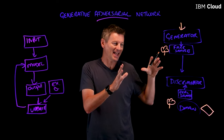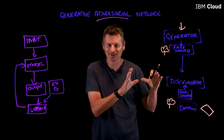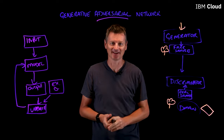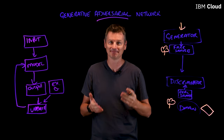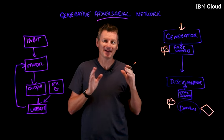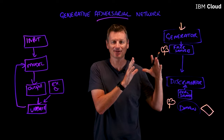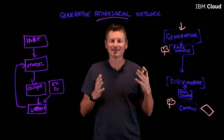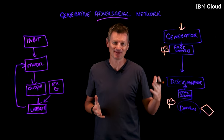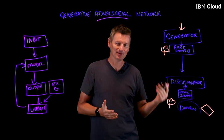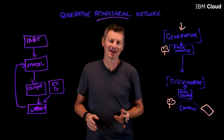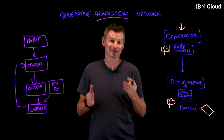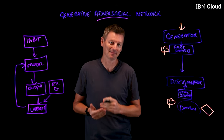The answer is revealed to both the Generator and the Discriminator. The flower was fake, and based upon that, the Generator and Discriminator will change their behavior. This is a zero-sum game — there's always a winner and a loser. The winner gets to remain unchanged, while the loser has to update their model.